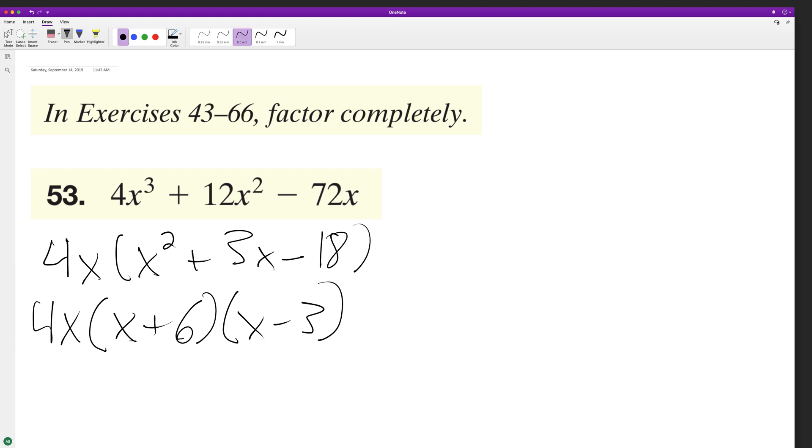multiply it back together to check. So 4x squared, 4x, and then we have x squared plus, actually it's going to be minus, 3x plus 6x minus 18.